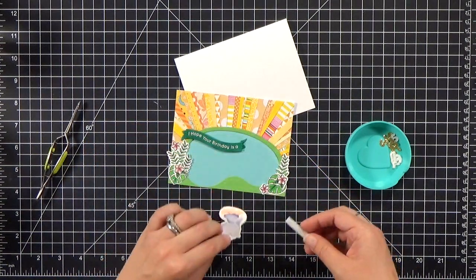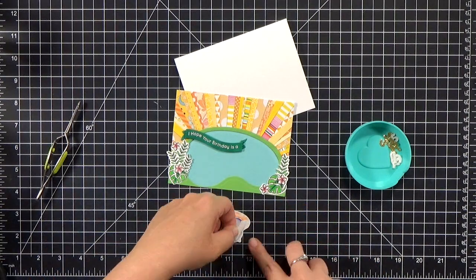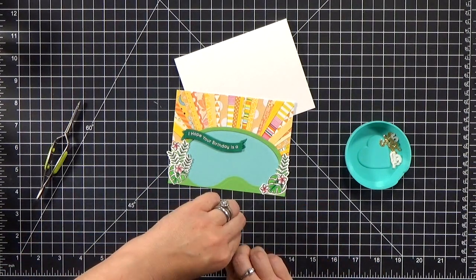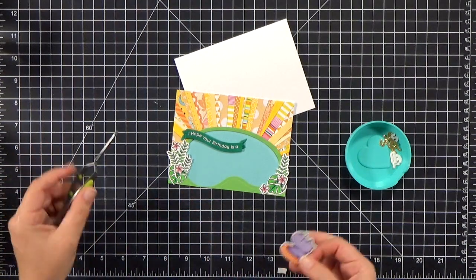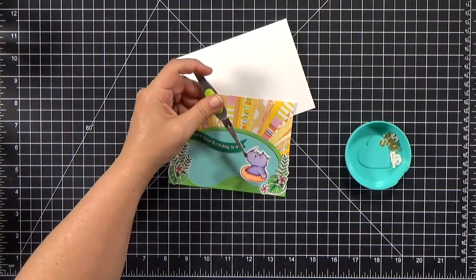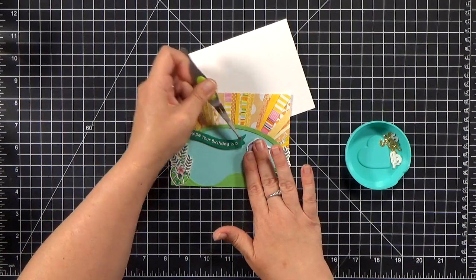And then we can add some foam tape to our little hippo too. Kind of add some extra dimension there and pop him up in the pool. He's so cute. I love this stamp set.